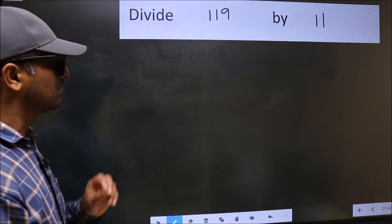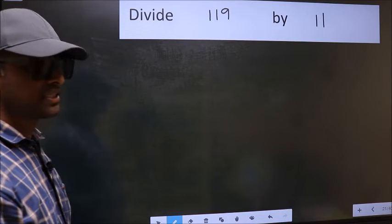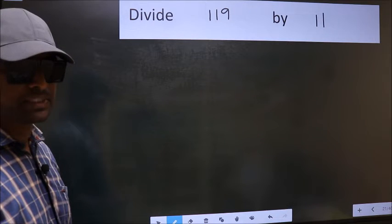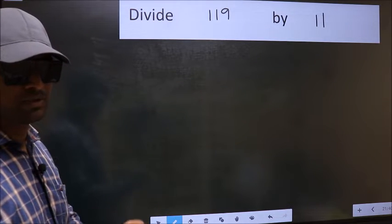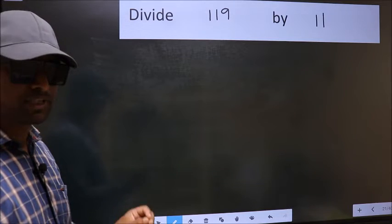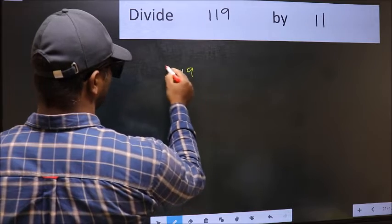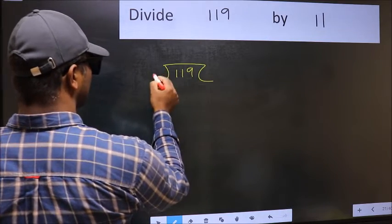Divide 119 by 11. While doing this division, many do this mistake. What is the mistake that they do? I will let you know. But before that, we should frame it in this way: 1, 1, 9 and 11 here.